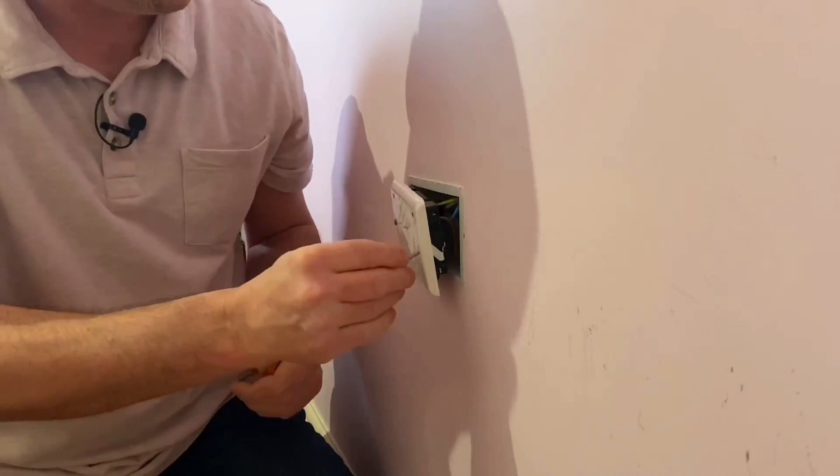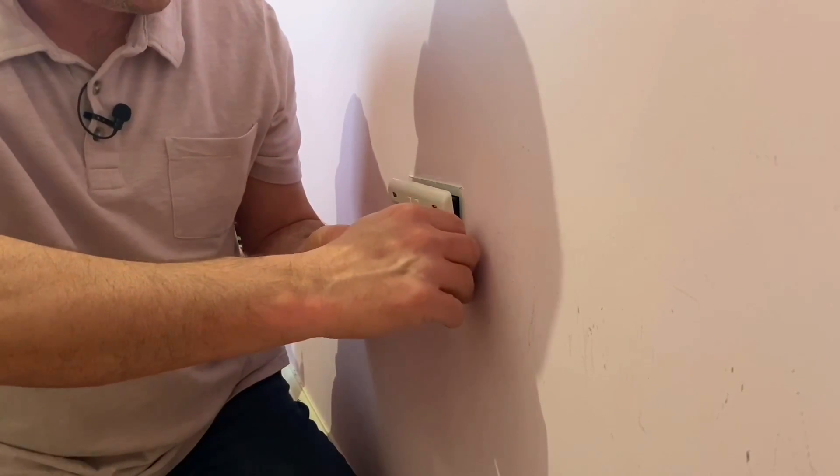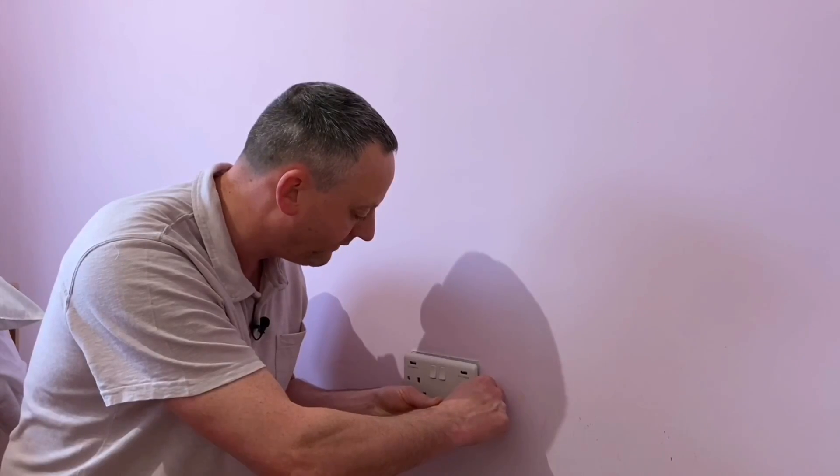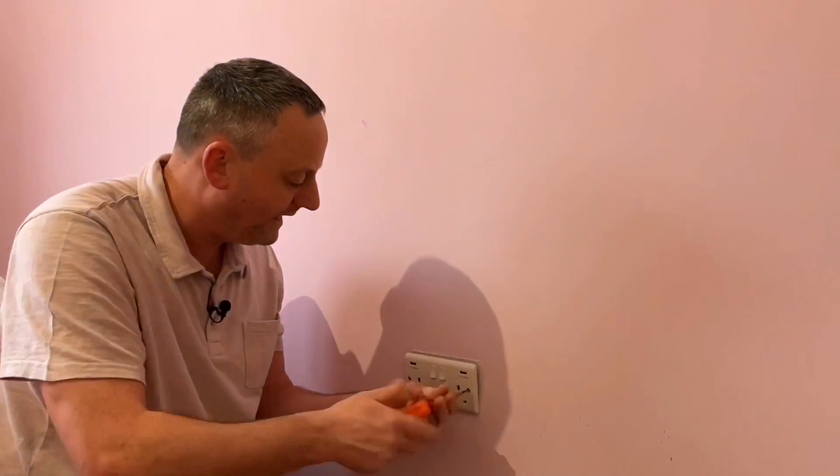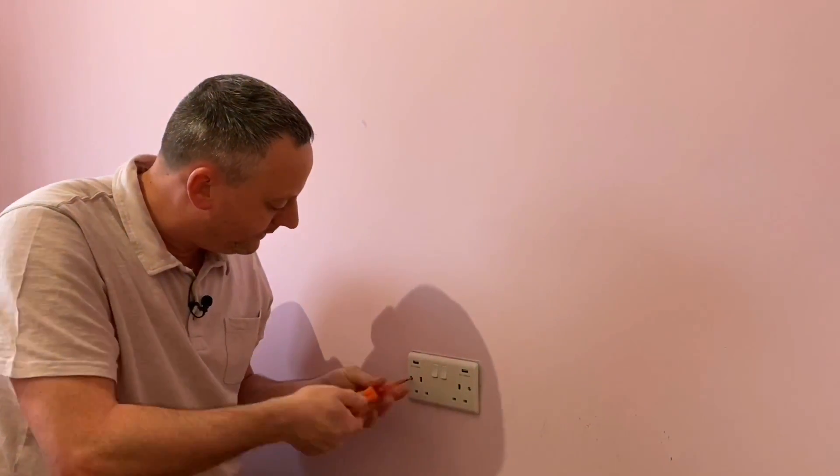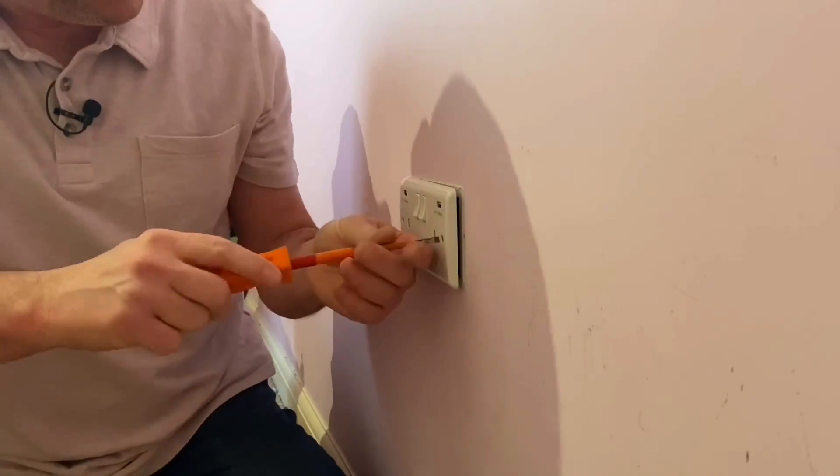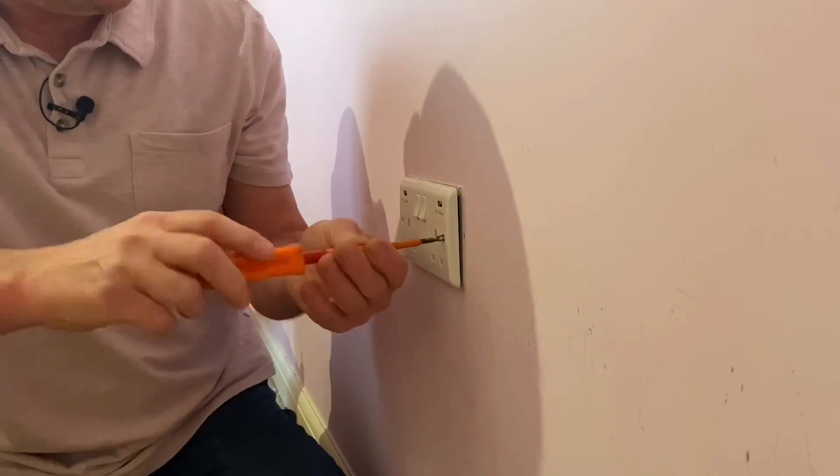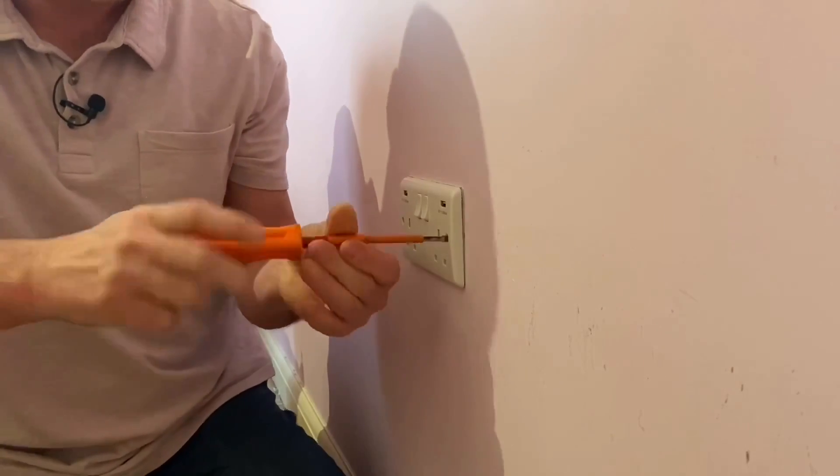So pop screws back on here and here. It did have a little bit of decorators caulk around. I'm not a massive fan of decorators caulk around electrical outlets, but it's been done in the entire house. So I will go back and just put a little bit of decorators caulk in on the edges. Just screw that one back on.